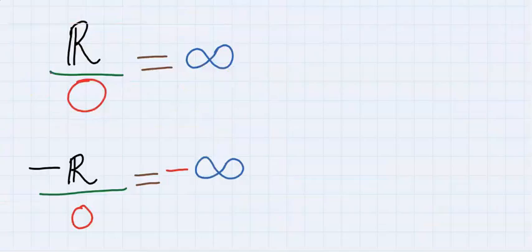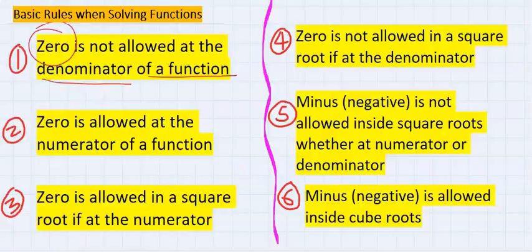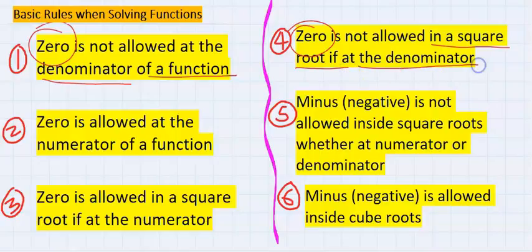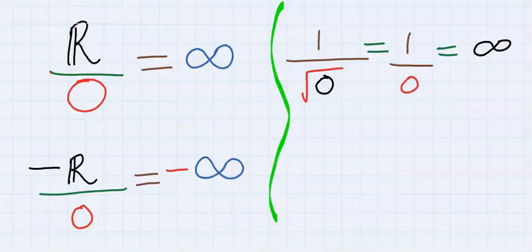If this happens, the function will tend to infinity—that is, it will become undefined. Also, zero is not allowed inside the square root if the square root is at the denominator. This will equally make the function cease to exist, that is, it will tend to infinity.